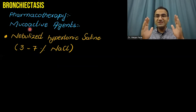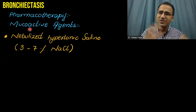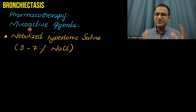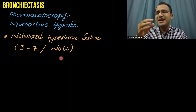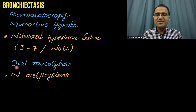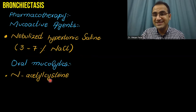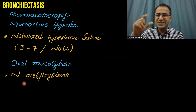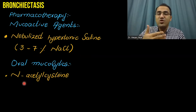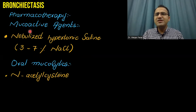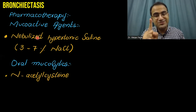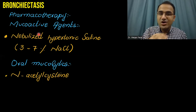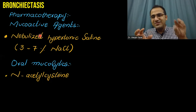In pharmacotherapy, mucoactive agents are very important. The basic idea is to drain the mucus out of the lungs. Nebulized hypertonic saline at 3–7% is given to cause lysis of mucus and drain it out. Oral mucolytics include N-acetylcysteine, which is mixed with water and drunk by the patient. Note that hypertonic saline and mucoactive agents can sometimes cause bronchoconstriction, so bronchodilators may be given prophylactically before starting mucoactive agents.